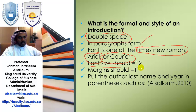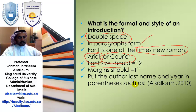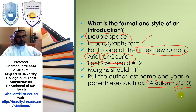You have to put the author's last name and the year in parentheses — as you can see, it is the family name or last name, then a comma, then the year in which the work was published.